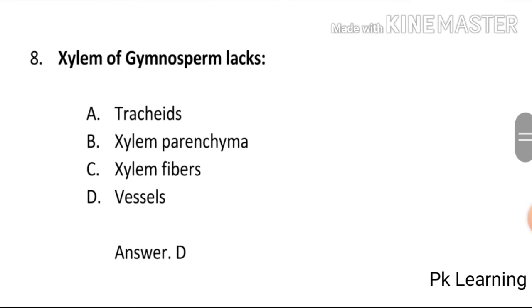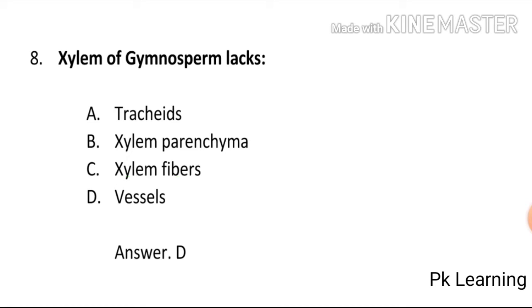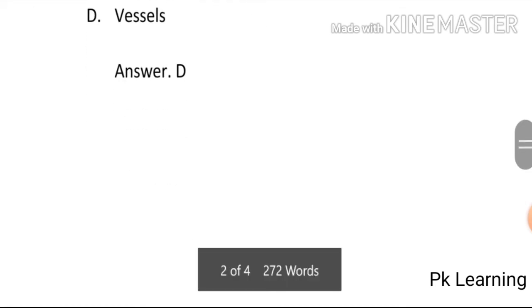Xylem of gymnosperms lacks: A) Tracheids, B) Xylem parenchyma, C) Xylem fibers, D) Vessels. The answer is D, vessels. Xylem of gymnosperms lacks vessels. D is the correct option.